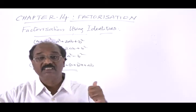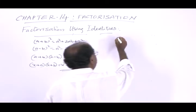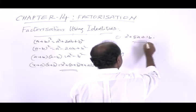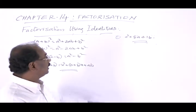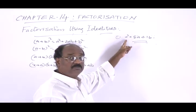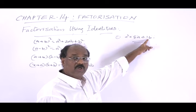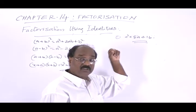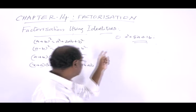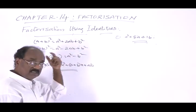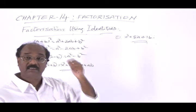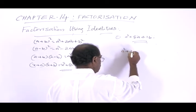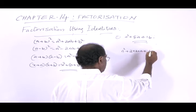Let us explain this with examples. First, consider a² + 8a + 16. Here a² is a square term, and 16 is also a perfect square — 4². So it may take the first identity form. When we check these terms, we can compare this expression with the identity. We see that this takes the form a² + 2 × 4 × a + 4².